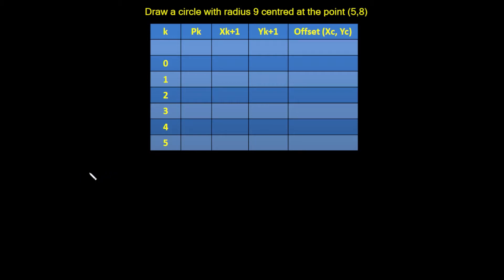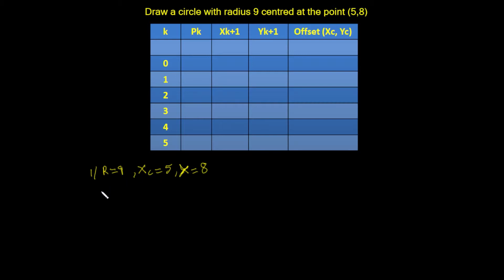We'll follow the routine seen in the previous video. The radius is 9, xc — the center x-coordinate — is 5, and yc — the center y-coordinate — is 8. These are the three parameters we bring into our function in assembly language. The initial conditions are x0 = 0 and y0 = radius = 9.